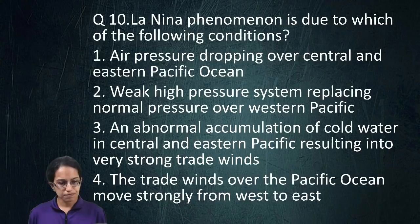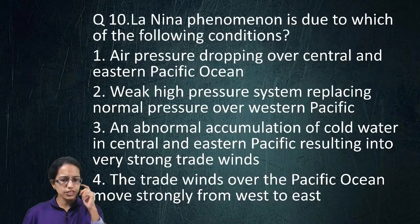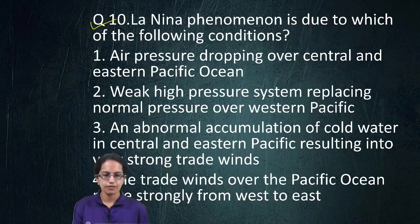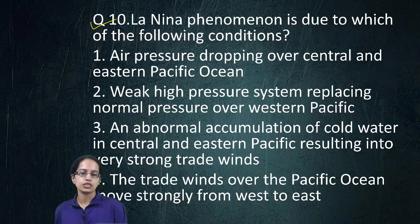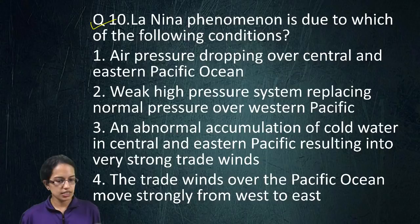The next question talks about La Niña. We have covered a class on La Niña — you can go back and refer to the class on La Niña/El Niño. ENSO stands for El Niño Southern Oscillation. During La Niña, you have higher pressure towards the eastern Pacific and low pressure towards the western Pacific. Therefore, option three is the right answer; options one and two are incorrect.